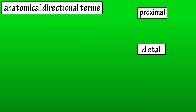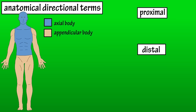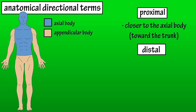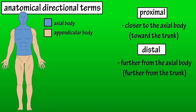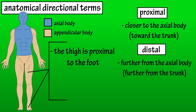Next is proximal and distal. Proximal and distal are terms that are usually used when describing parts of the appendicular body. The axial body consists of the head, neck, and trunk, and the appendicular body consists of the limbs or appendages that are added to the axial body. Proximal means closer to the axial body, or toward the trunk of the body, and distal means further from the axial body, or further from the trunk of the body. So we would say the thigh is proximal to the foot, or the foot is distal to the thigh.